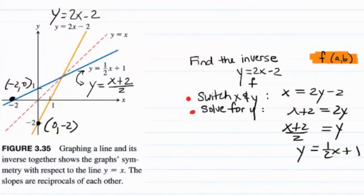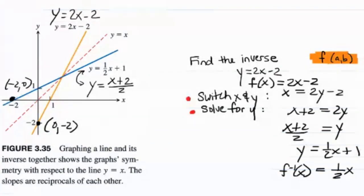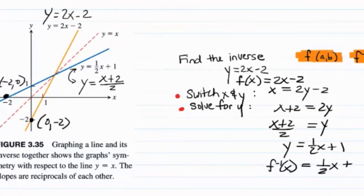If the notation gave the original function the name f of x equals 2x minus 2, then the inverse of that function would be f to the negative 1 power of x equals 1 half x plus 1.